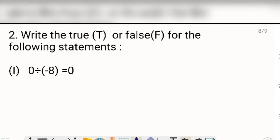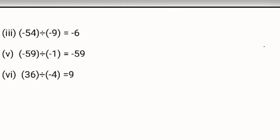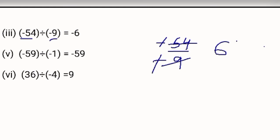Next question, question number 2: write true or false for the following statements. First statement: 0 divided by minus 8. It is very simple — if we divide 0 by any number, we get 0. So this is true. Now the third part: when you divide minus 54 by minus 9, what do you get? In both numbers we have negative signs, so minus minus will be cancelled out, meaning the answer will be plus 6. But they have written minus 6 here, so this is false.